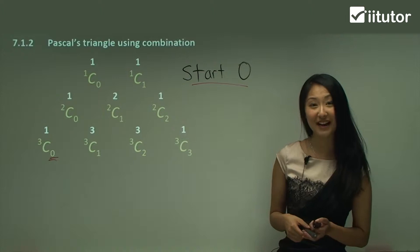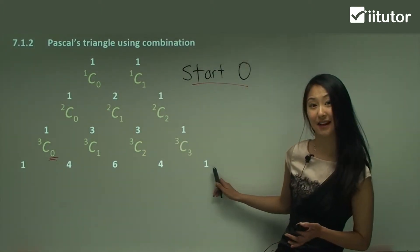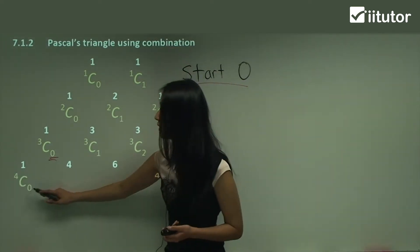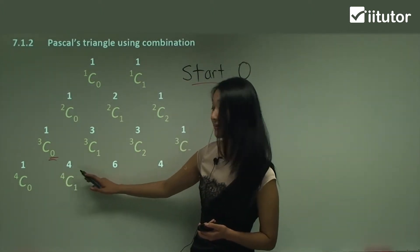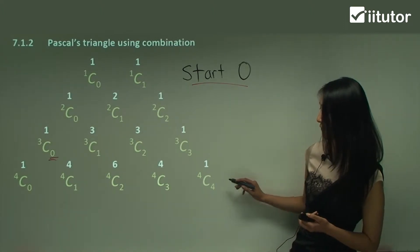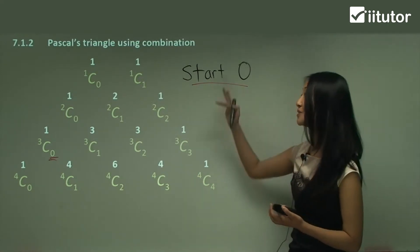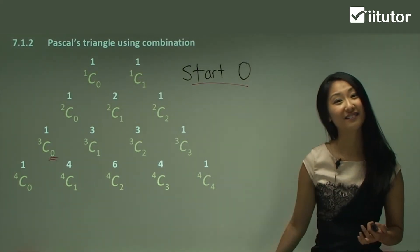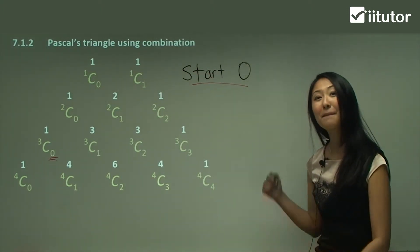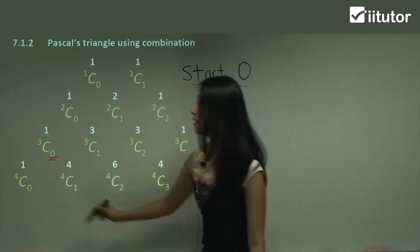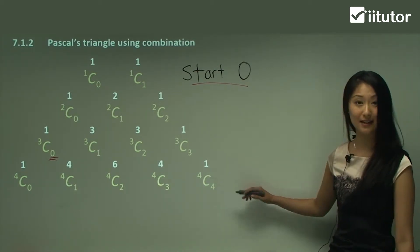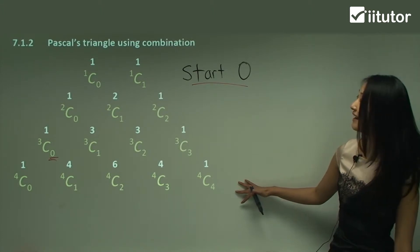Let's use combinations to get the same numbers as Pascal's triangle for the index of four. We start with 4C0, then 4C1, 4C2, 4C3, and finally 4C4. This is why combinations become so useful: for a power of 20, it would take a long time to write out the whole triangle, but you simply start with 20C0, then 20C1, 20C2, all the way up to 20C20.